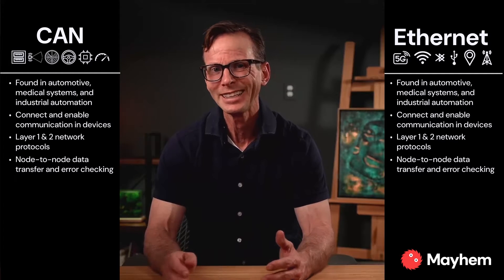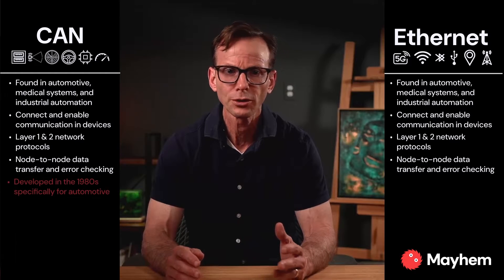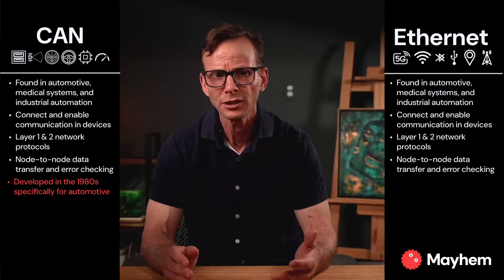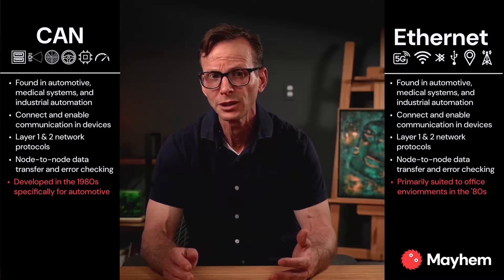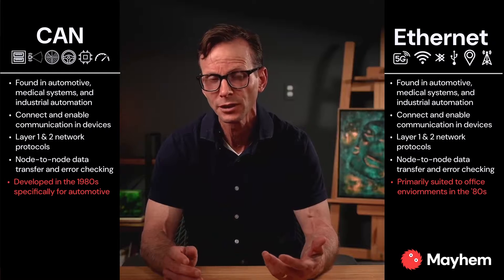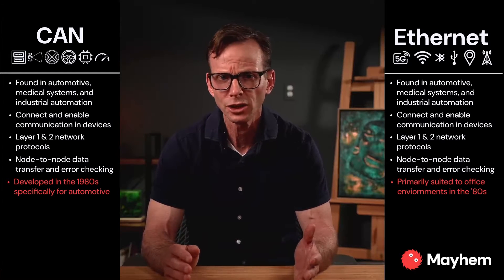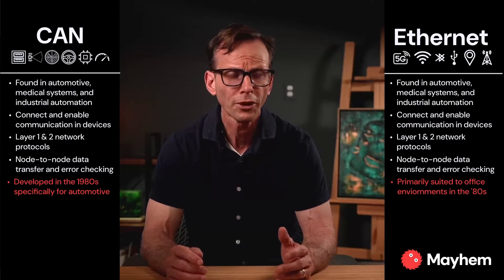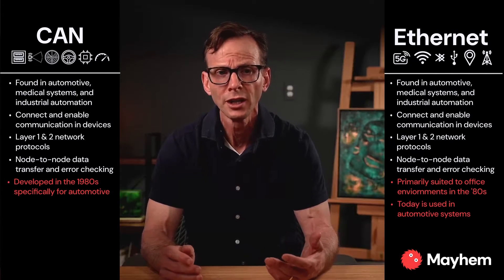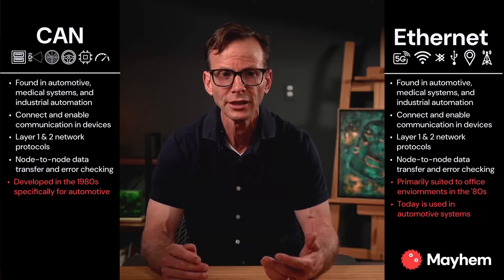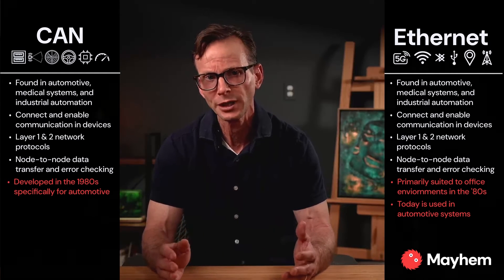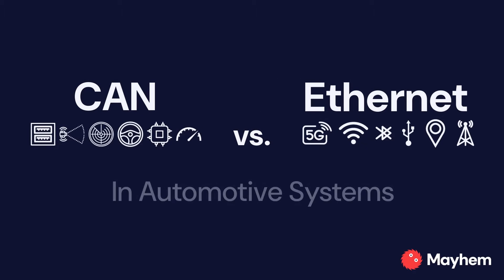Bosch developed CAN in the 1980s specifically to support the growing number of computers in a car. At the time, Ethernet was primarily suited to office and computing environments and was not yet adapted to meet the specific needs of automotive systems. Over the years, however, Ethernet technology has evolved and is becoming more prominent in modern cars, particularly for systems that require higher bandwidth like infotainment systems and advanced driver assistance systems. Let's compare five different strengths and weaknesses of CAN and Ethernet in automotive.